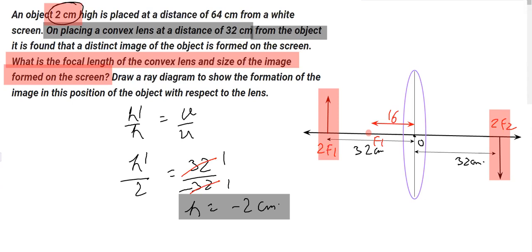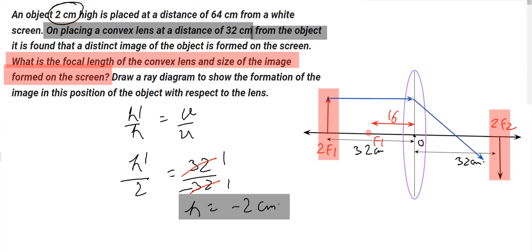There is also a ray diagram to draw. First, draw the object and draw a line parallel to the principal axis — after refraction it should pass through the focus F₂. The second ray passes through the head of the object to the optical center. Wherever the two refracted rays meet, that gives the image. Indicate the direction of the rays of light — this is how the ray diagram is done.